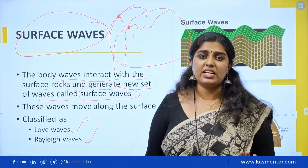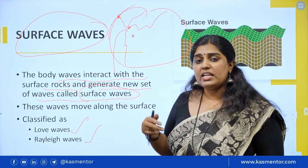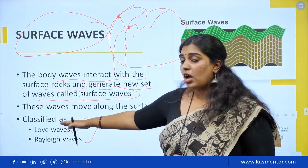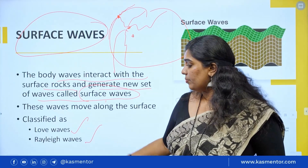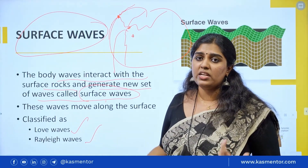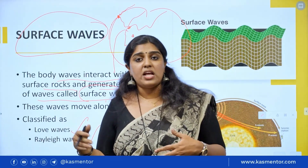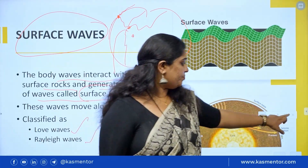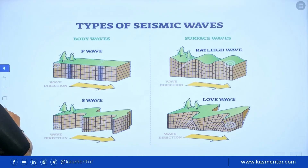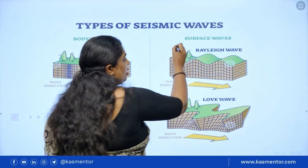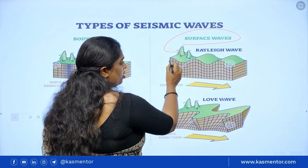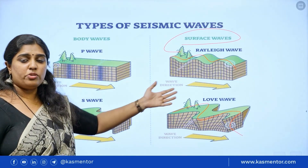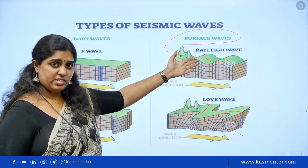Love and Rayleigh are both names of scientists. These are the main differences in the propagation pattern. If you look at the classification of the surface wave, it is called the Rayleigh wave or the Love wave — each has a different propagation pattern.